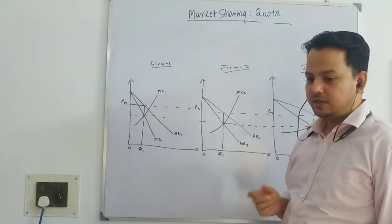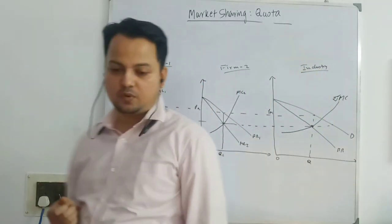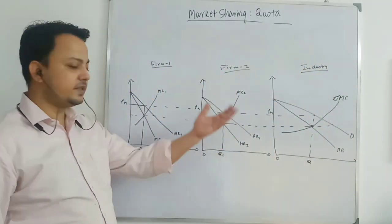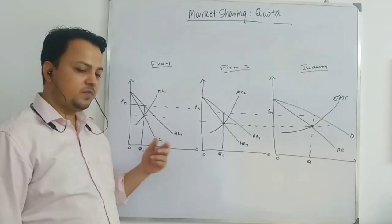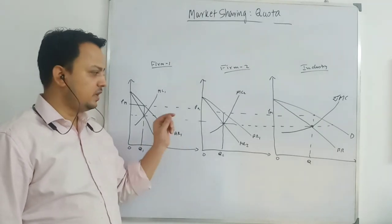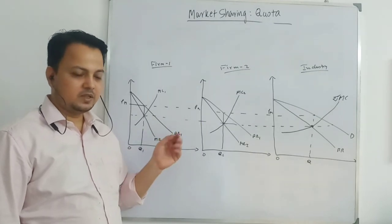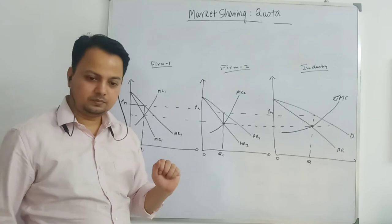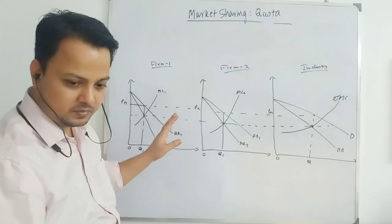So in the quota system, under what condition can we see that firms are charging a uniform price even having different costs? When there is a threat to entry. When firms see that there is a threat to entry, they will be charging a price different from their profit maximizing price in order to avoid entry of new firms.